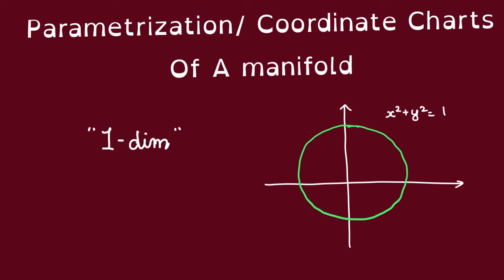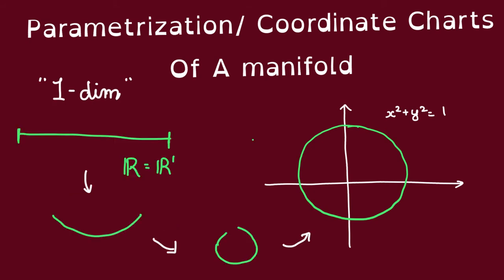How do we capture the one-dimensional part? There are two equivalent ways to think about this. One, as you know, is that the circle locally looks like R. Observe that if we take any interval in R, we can curl it up, we can wrap it up, and turn it into a circle.